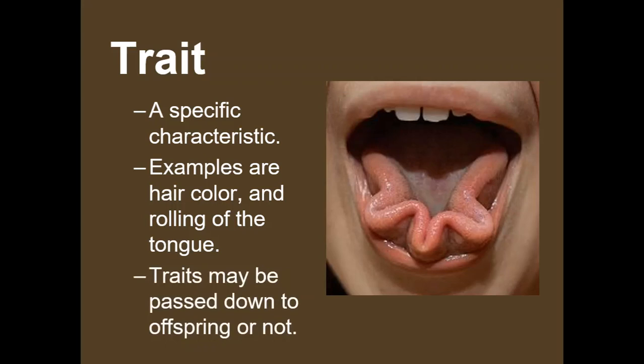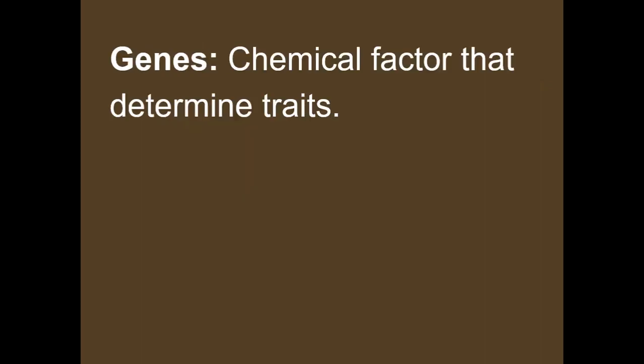When you look at families, you can see that sometimes the eyes look the same between a father and daughter, or maybe the hair color or texture. But sometimes you look at a trait and you can't see it in the mother or the father. So sometimes traits show up and sometimes they don't, and there's a reason for that.